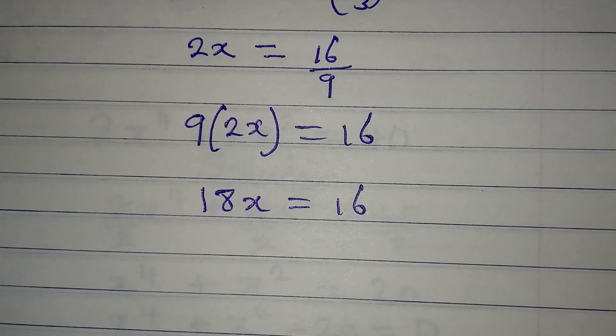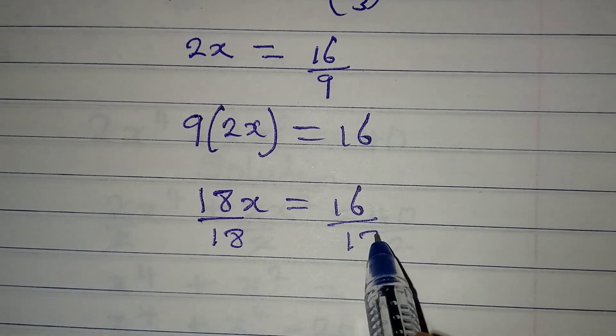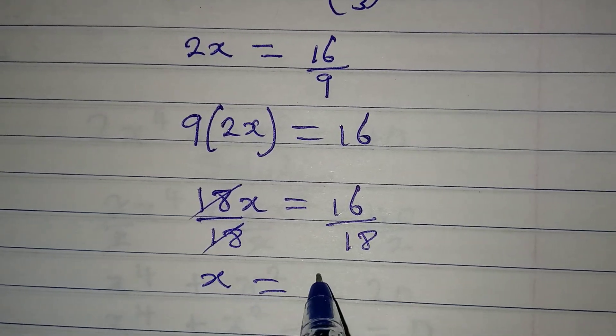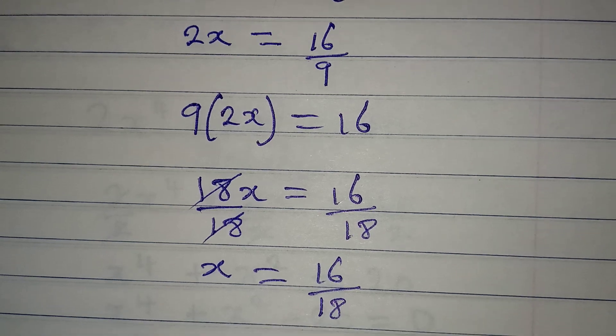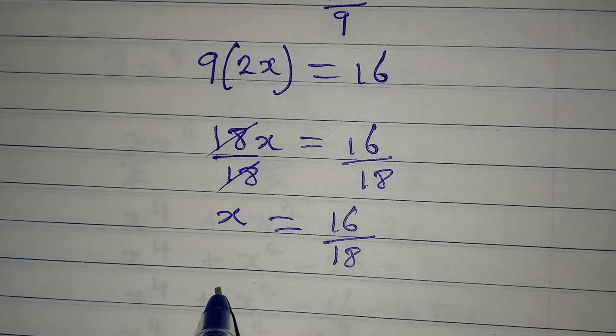Now we can reduce this or divide both sides by 18 so that we get the value of x. This will cancel, and then x is equal to 16 over 18. Now can we reduce 16 over 18 to a lower term?